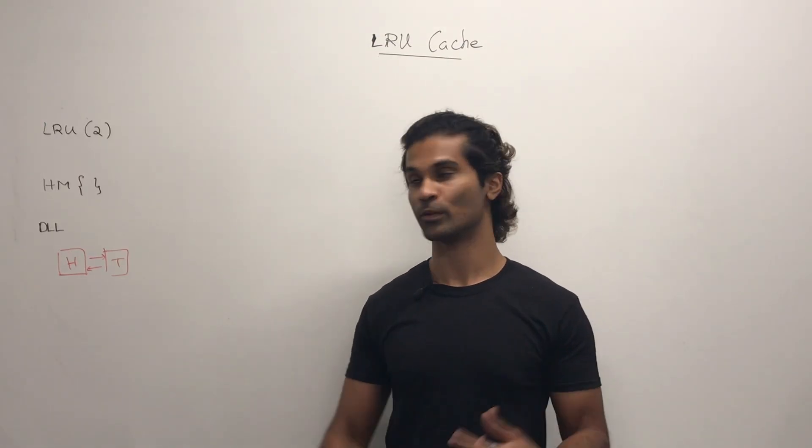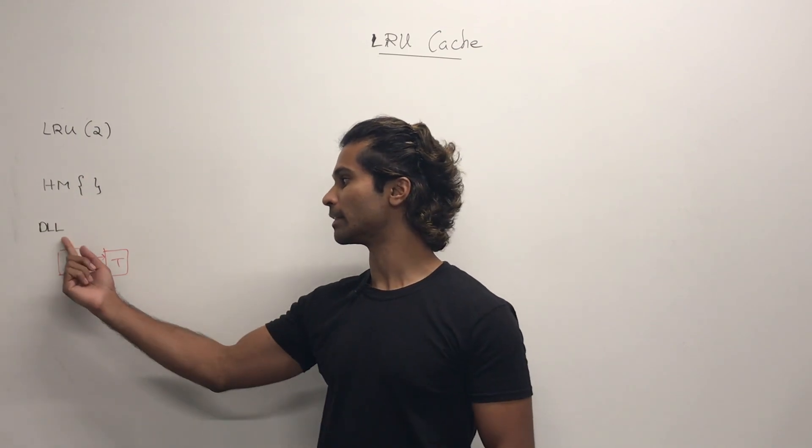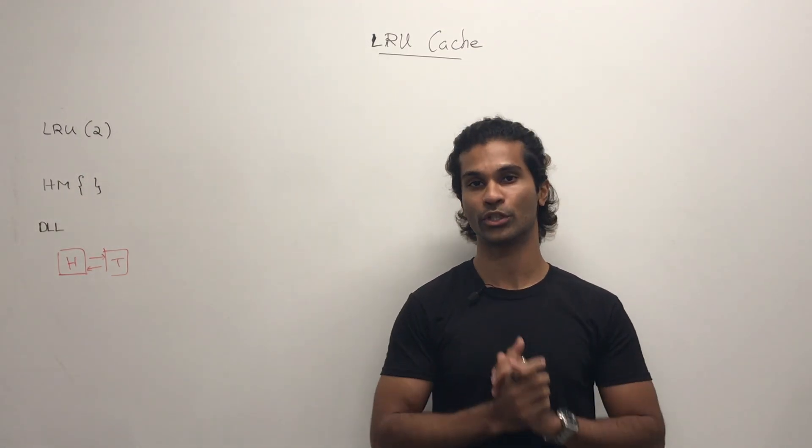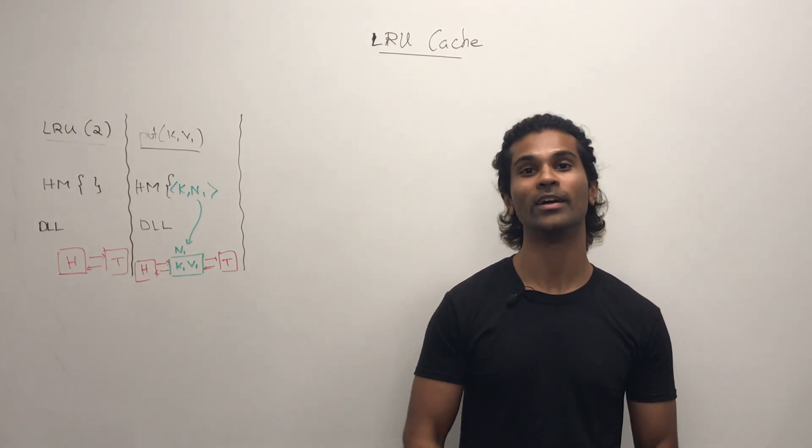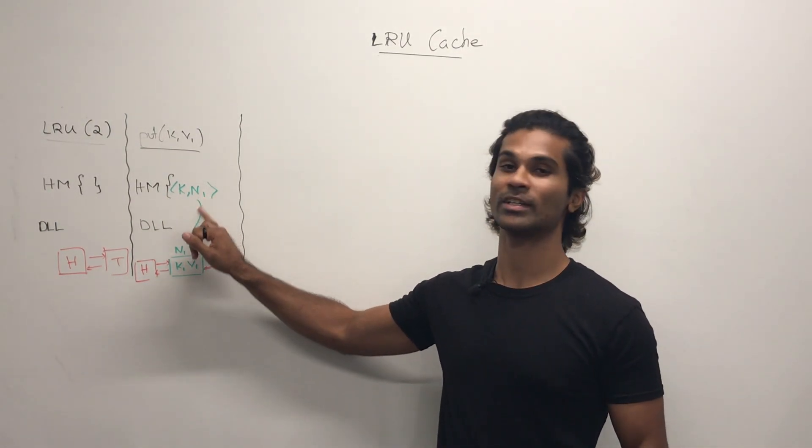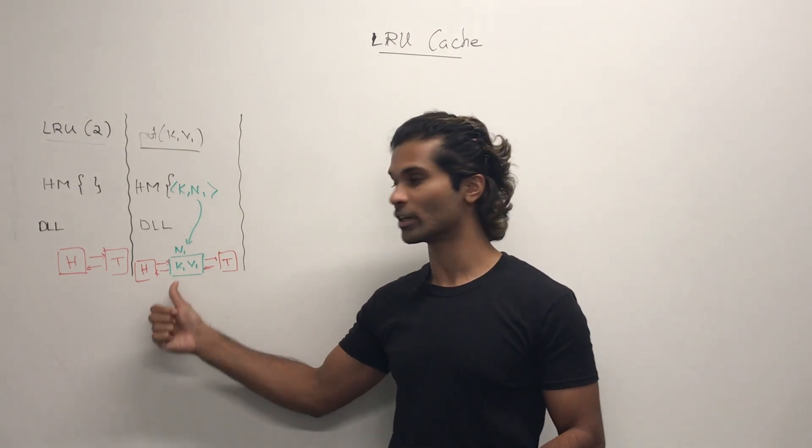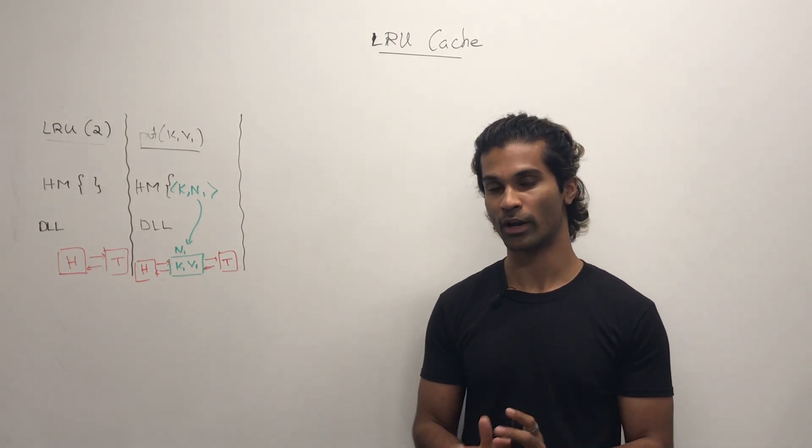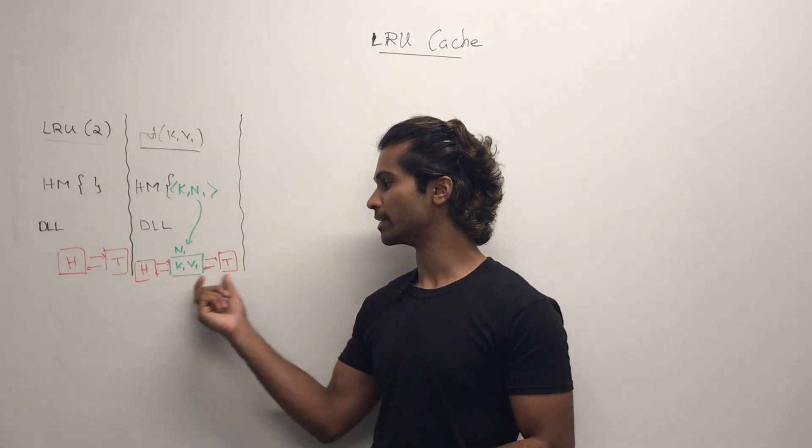Initializing LRU of size two, the hash map is empty, but the doubly linked list has the head and the tail pointing to each other. I call put of k1v1. Now k1 is in the hash map, but the value is a reference to the node and here is where we actually store the k1v1. Notice how it's in between the head and the tail.